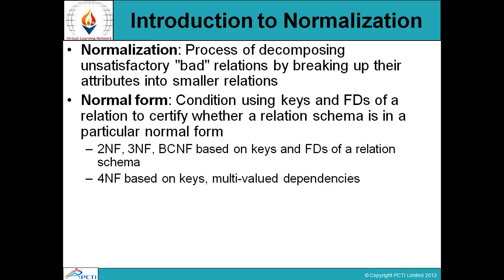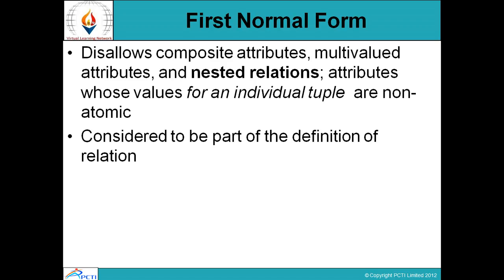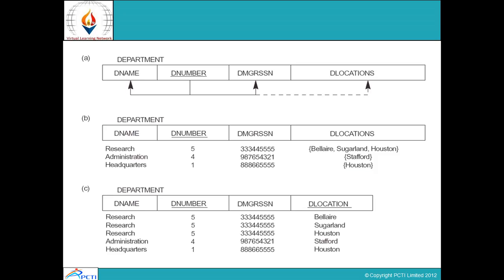The first normal form disallows composite attributes, multi-valued attributes, and nested relations. Attributes whose values for individual tuples are non-atomic are not allowed. The first normal form removes multi-valued attributes. Let's see this diagram.